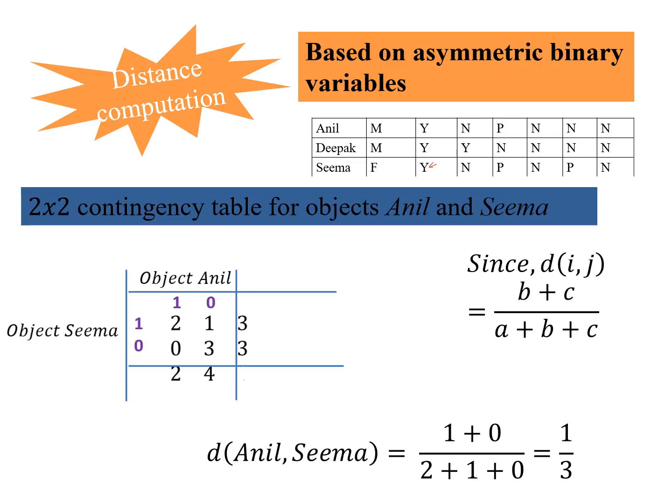Now we do this computation for objects Anil and Sima. Now this value a, where both of them are 1, comes out to be, let us see, so this is Anil and Sima are both one. So one instance and another one here. So two are y and this is pp. So this gives us a count of 2.